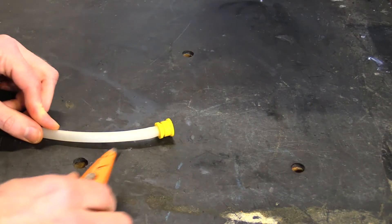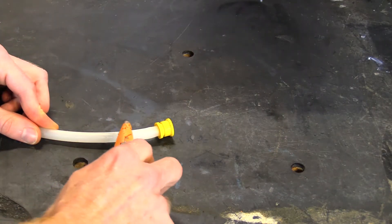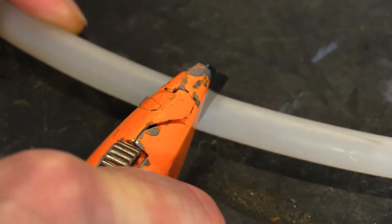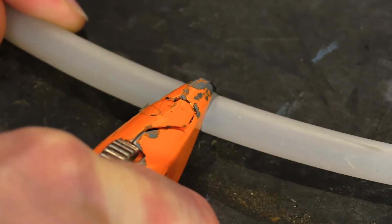First, you'll want to cut off the existing ferrules. These are not to be reused. It's recommended to use a tubing cutter to ensure a straight cut.